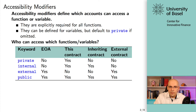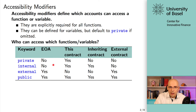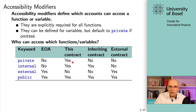Internal is different again: EOAs cannot use it, and external smart contracts cannot use it. Internal means only the functions that are part of this smart contract or inheriting contracts can access this function. Then private means EOAs cannot use it, inheriting contracts cannot use it, external contracts cannot use it — it's just this one contract that can use it. What's important to know is that external can only be used for functions, not for variables.